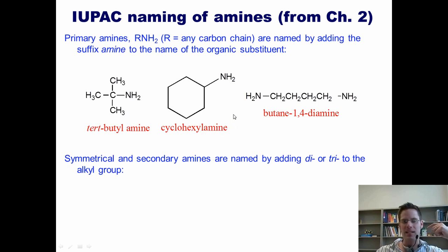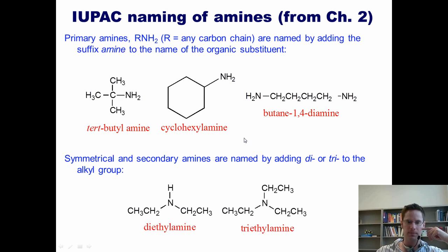Symmetrical and secondary amines are named by adding di or tri to the alkyl group. Thus, if I've got a nitrogen stuck to two ethyl groups, for example, I would call it diethylamine. A nitrogen stuck to three ethyl groups would be called triethylamine.